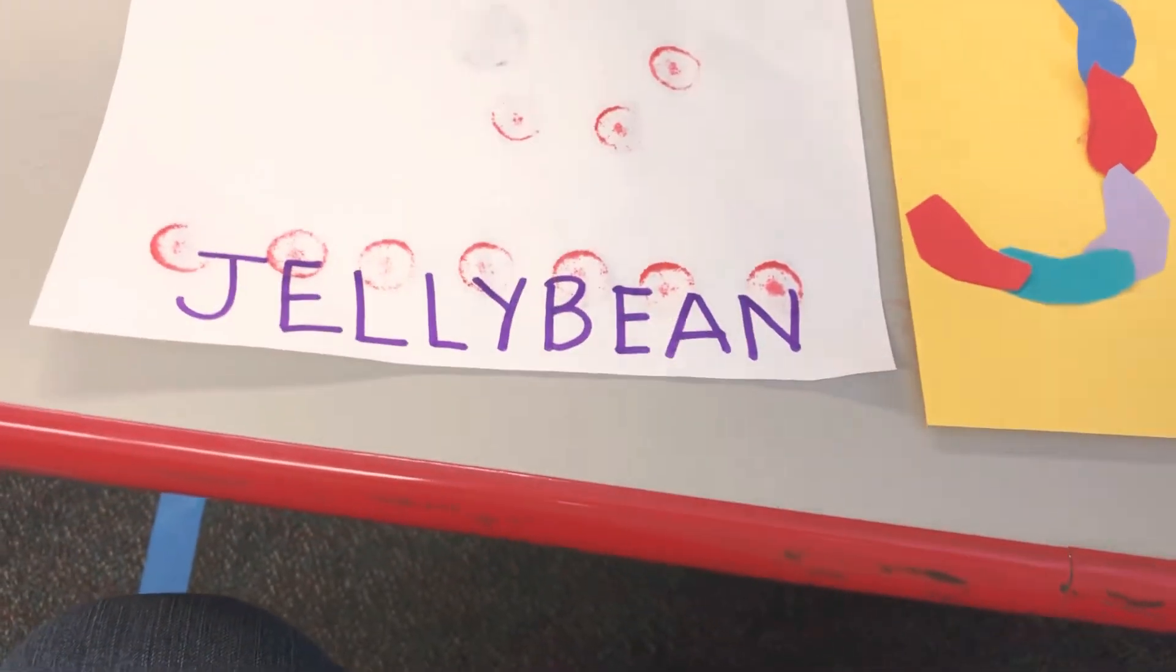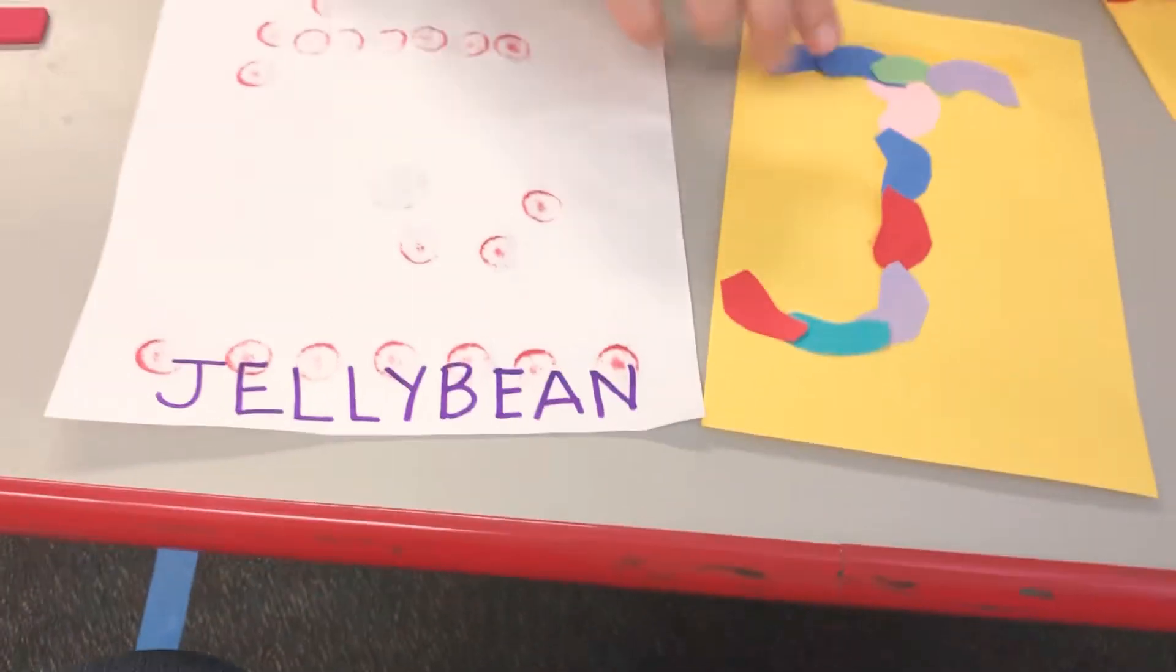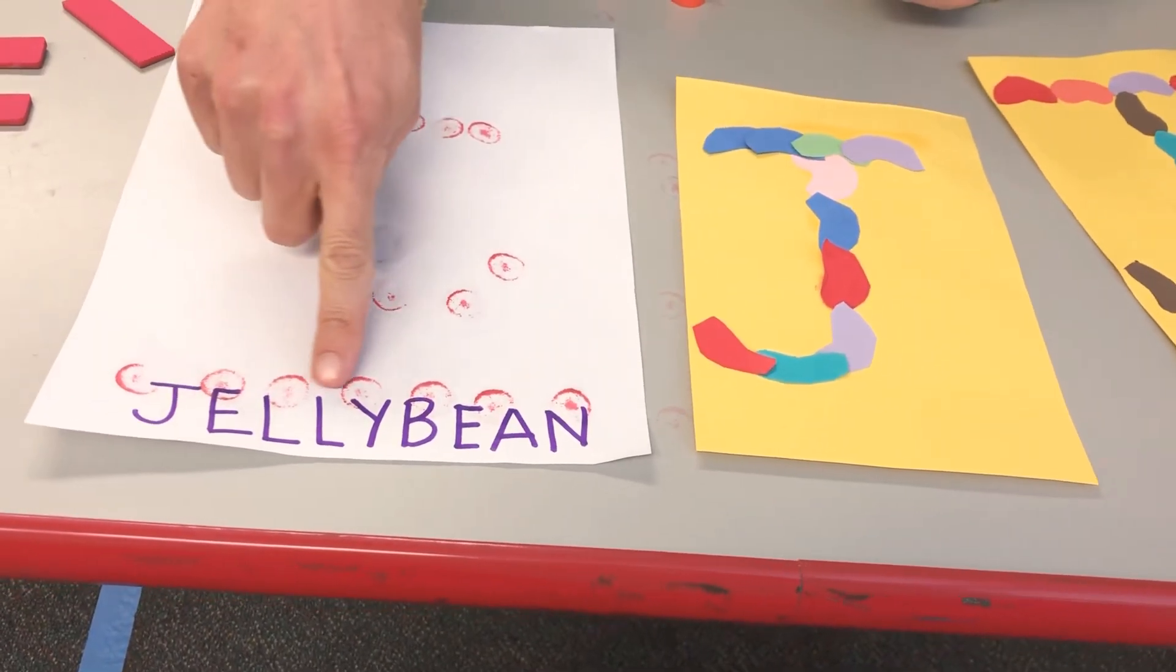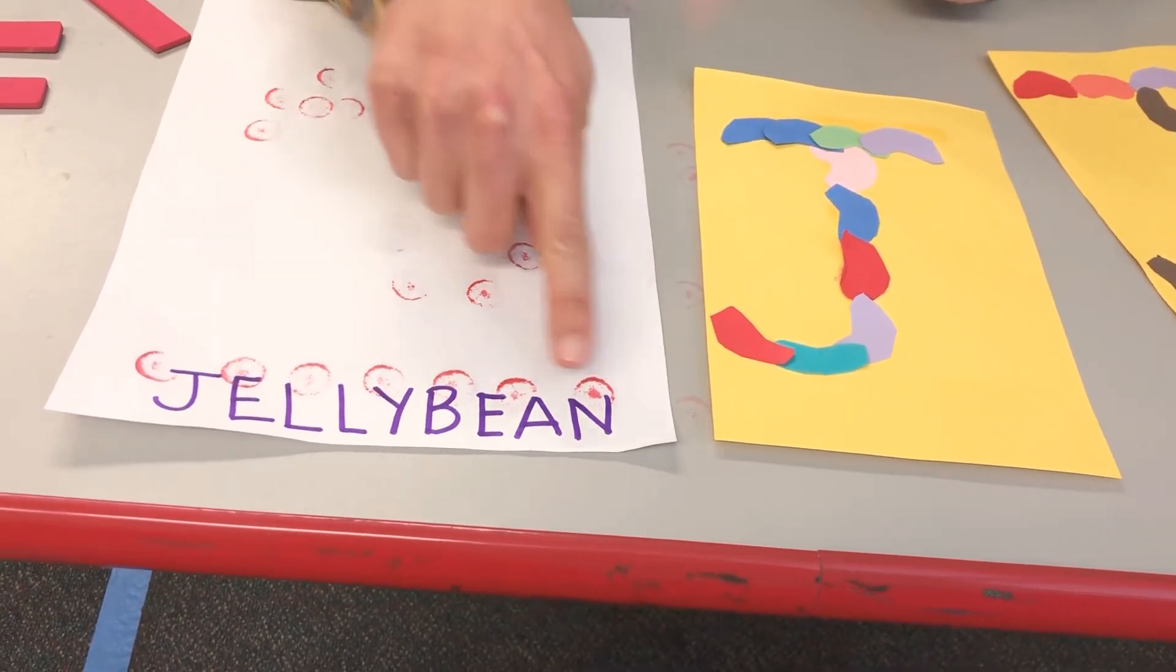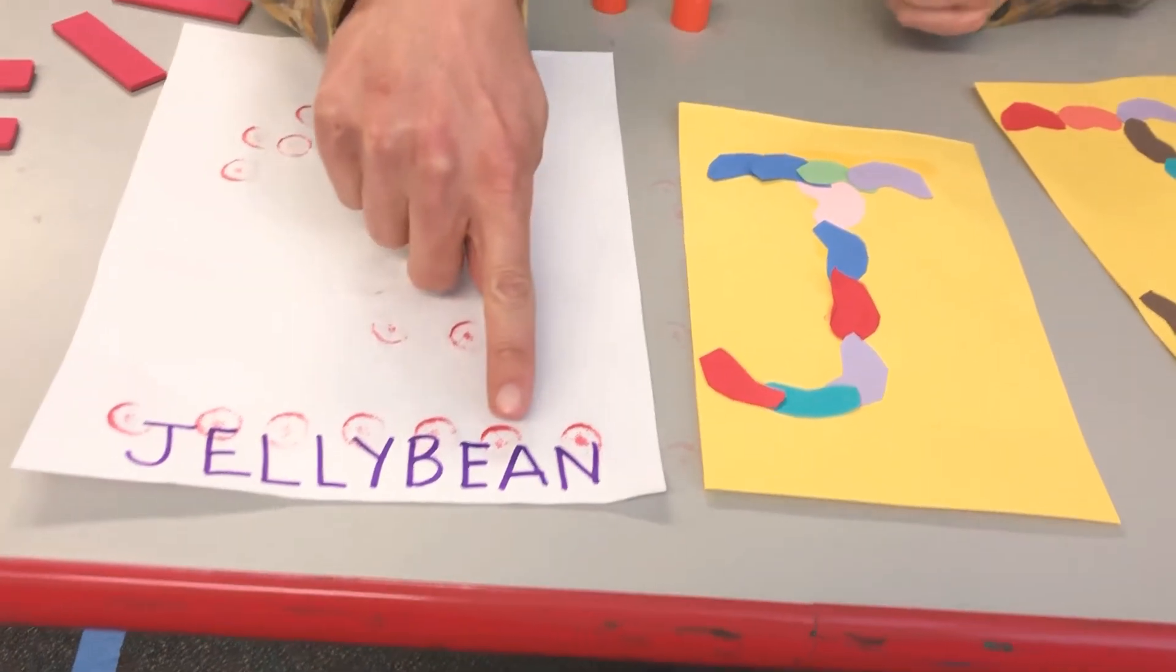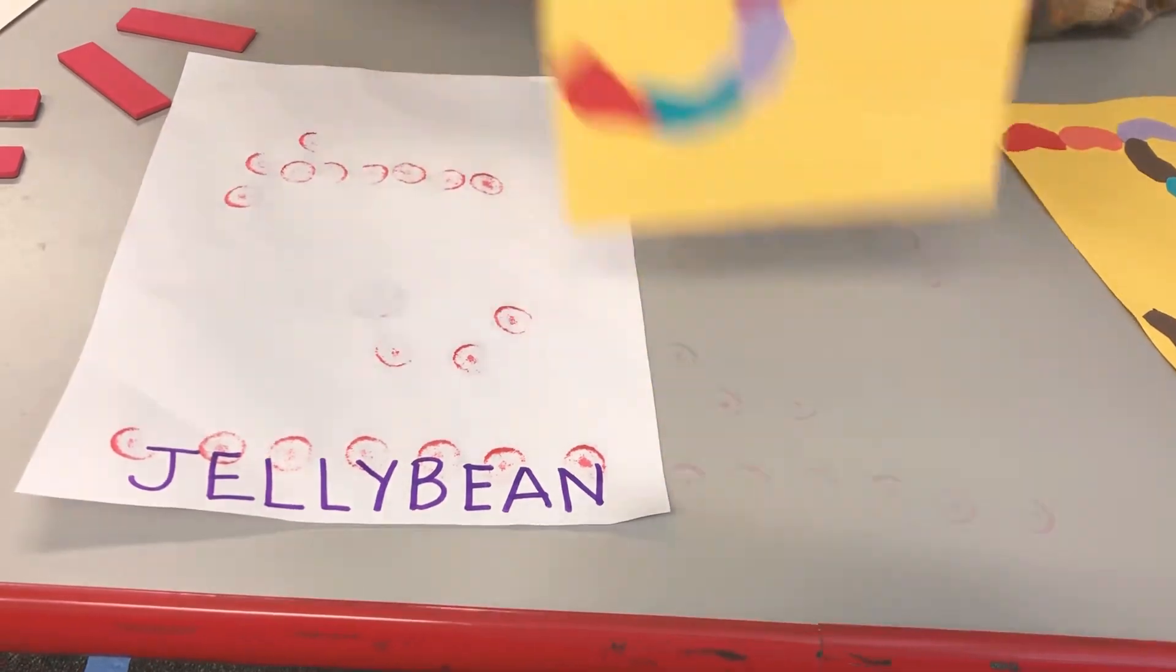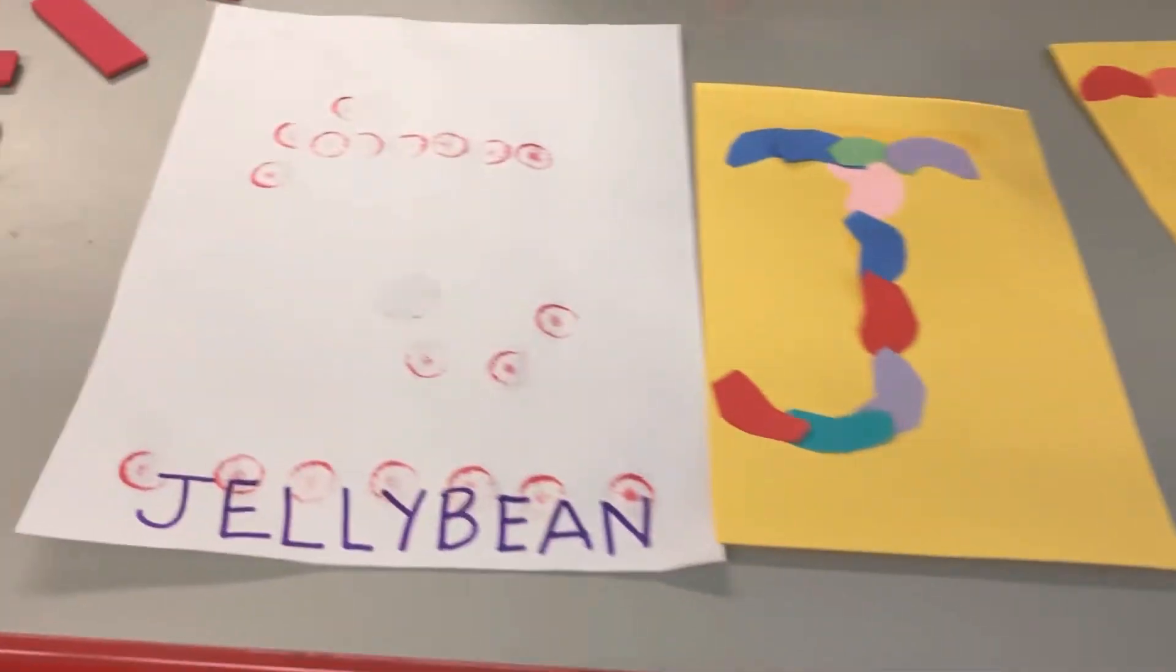That's what we did in class today. Because we had a lot of friends finish this pretty quickly. So then afterwards, Ms. Washington wrote jelly bean. So you can do that at home on a separate piece of paper. And then have your child either copy it or trace it. Okay. It's good writing practice right there.